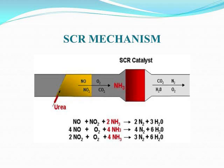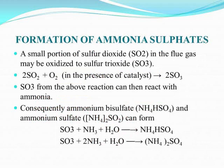Ammonia slip can be reduced by maintaining ammonia injection below 850°F. Ammonia is typically injected at stoichiometric ratios of approximately 0.85:1 to 0.9:1 to maintain low ammonia slip levels. This means approximately 0.9 moles of ammonia is needed for every mole of NOx that must be reduced in order to achieve the emission limitations.